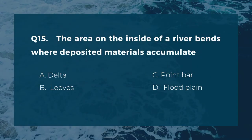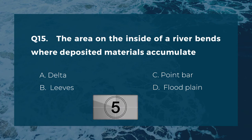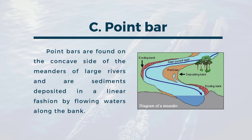Question fifteen: the area on the inside of a river bend where deposited materials accumulate. A) delta, B) levees, C) point bar, D) flood plain. The answer is C, point bar. Point bars are found on the concave side of the meanders of large rivers and are sediments deposited in a linear fashion by flowing waters along the bank.